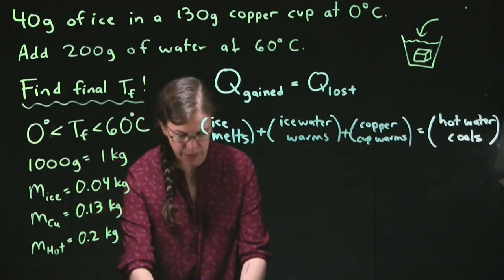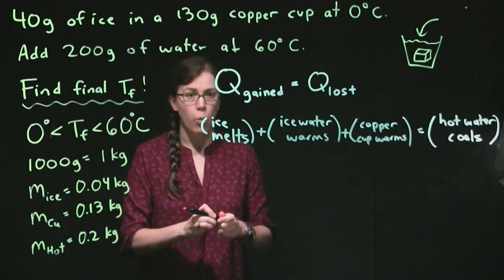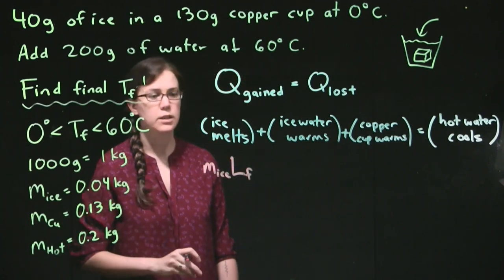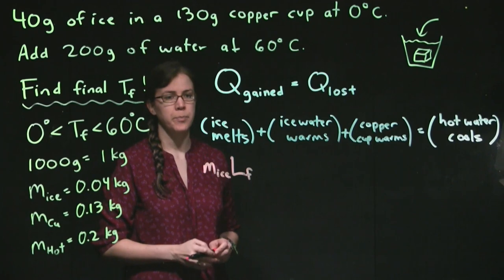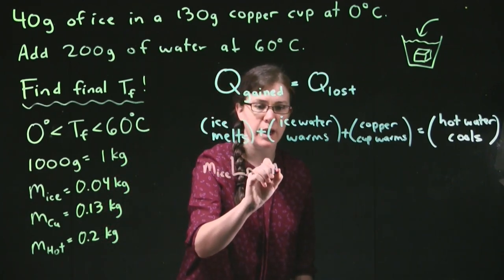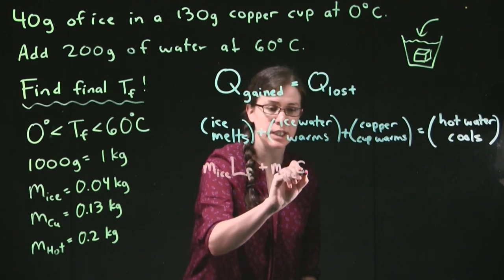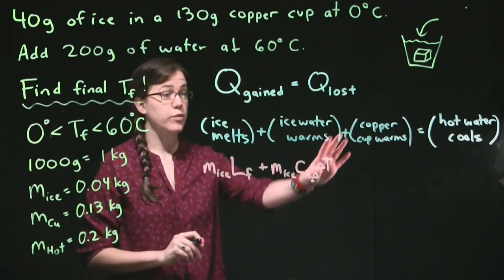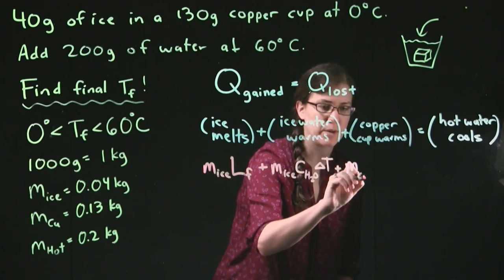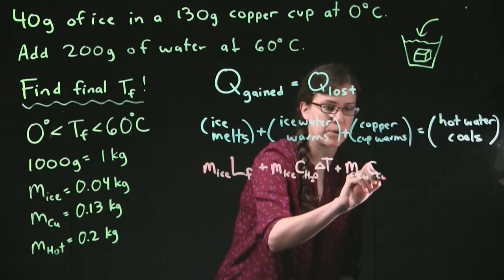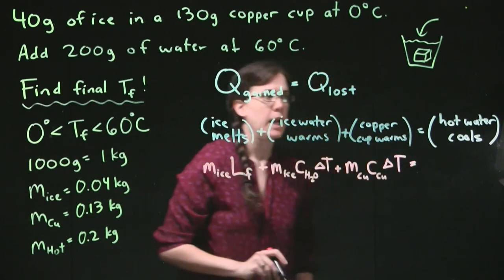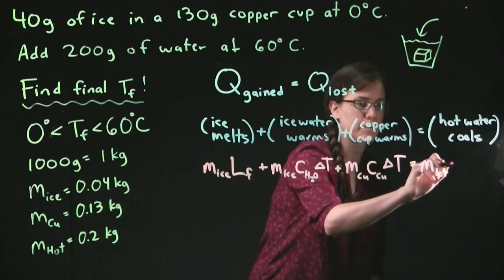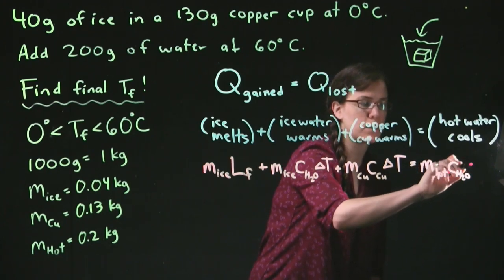If we look at the actual equations then for each of these terms, we have for ice melting: the mass of ice times this latent heat idea, L_F. Then we have the water warming: the mass of that ice water times C_H2O times delta T. We have the copper cup warming: mass of the copper times C_Cu times delta T. And then we're going to have the hot water cooling: the mass of the hot water, it's still water though, times C_H2O times delta T.